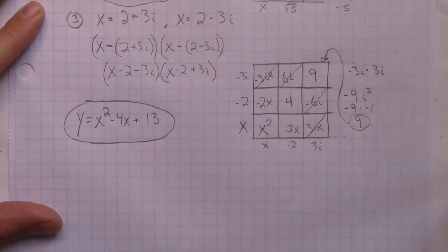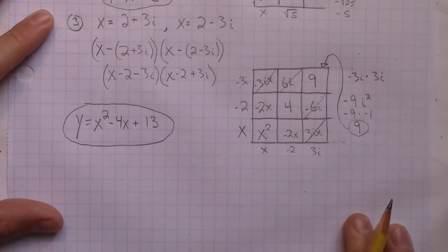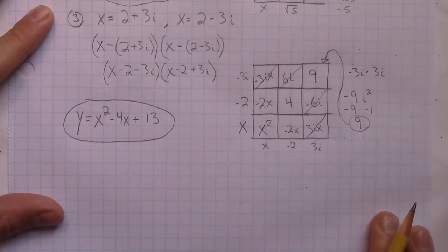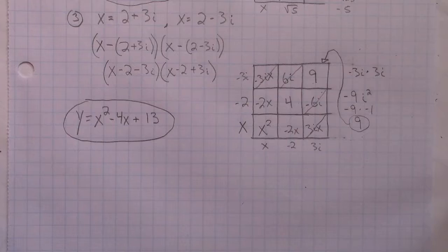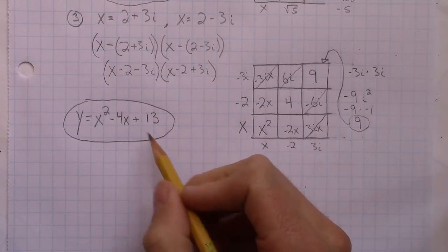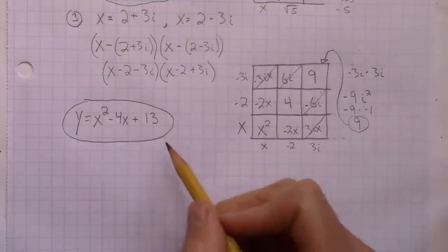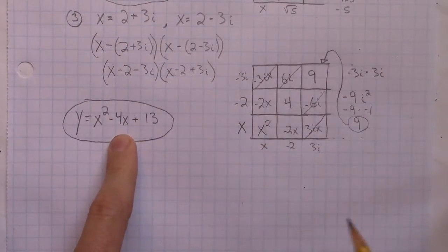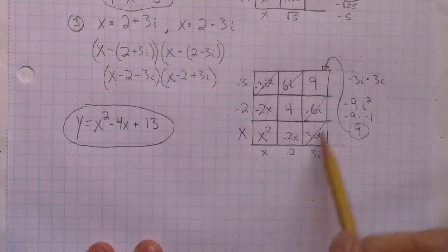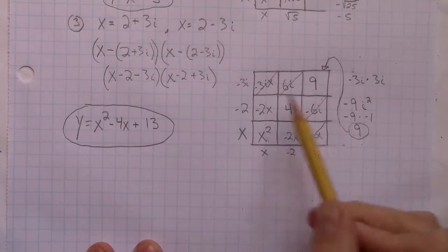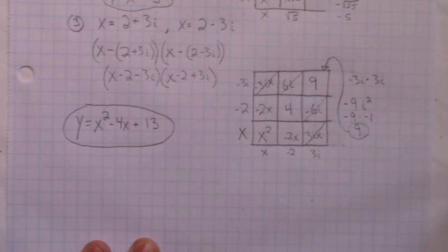I started off with complex roots, which means the discriminant — b squared minus 4ac — must have been negative. b squared would have been 16 minus 4 times a times c, and yes, that's a negative number. So if you use the quadratic formula to solve this, you'll get these complex roots. That's my polynomial. That's how you take complex roots, write them in factored form, multiply them together using this box method, and combine like terms. Good luck.